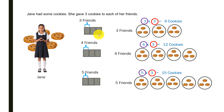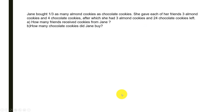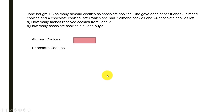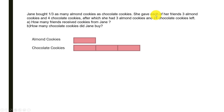Now we come back to the original question. Jane bought one-third as many almond cookies as chocolate cookies, which means we represent almond cookies as one unit and chocolate cookies as three units. She gave each of her friends three almond cookies and four chocolate cookies. She gave three almond cookies to each friend, and after giving them out, she was left with three almond cookies.